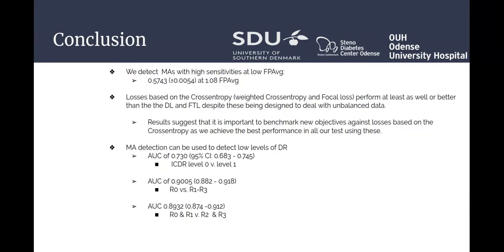In conclusion, we are able to detect microaneurysms with high sensitivities at low false positive averages per image. We see that losses based on cross-entropy, such as weighted cross-entropy and focal loss, perform at least as well or better than the Dice loss and focal Tversky loss. We also see that MA detection can be used to detect low levels of diabetic retinopathy.